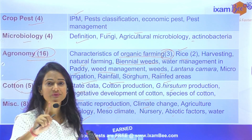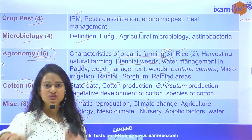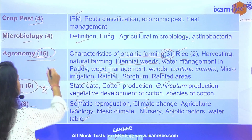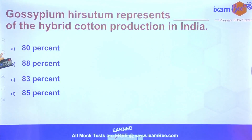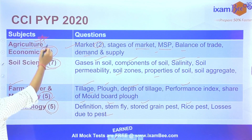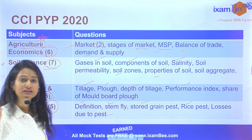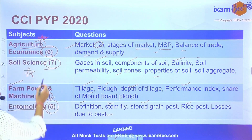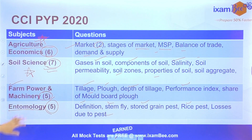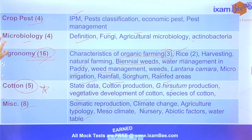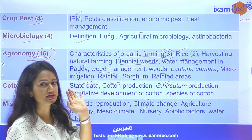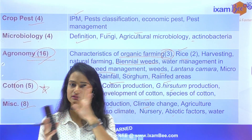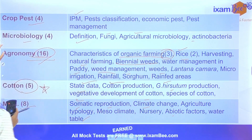Agronomy aapko bohot achhe se karna hai, specially cotton ka jo bhi package of practices hai woh saara aap ek baar dekh lijiye ga. Agronomy pe zyada questions hai. Iske alawa, agriculture economics aapke liye important hai — 6 questions; soil science — 7 questions; farm power — 5 questions; entomology — 5 questions; cotton toh alag hoga hi. Ye sare topics jo bhi mentioned hain, aap woh saare ek baar padhke jayenge.